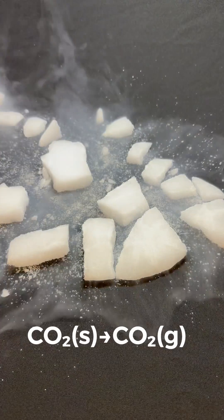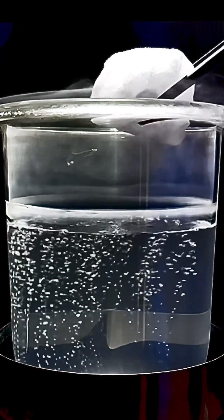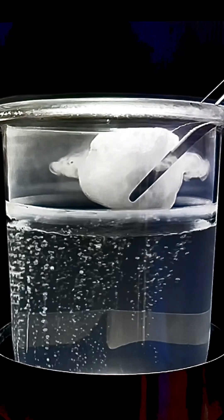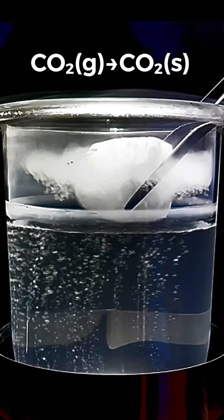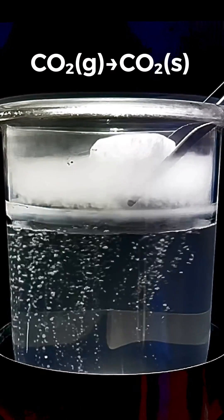So these chunks of dry ice are undergoing sublimation and giving off a lot of carbon dioxide gas. When the gas subliming off the solid dry ice is cooled by holding it over some liquid nitrogen, it undergoes deposition and forms a bunch of tiny dry ice particles that we see as a cloud.